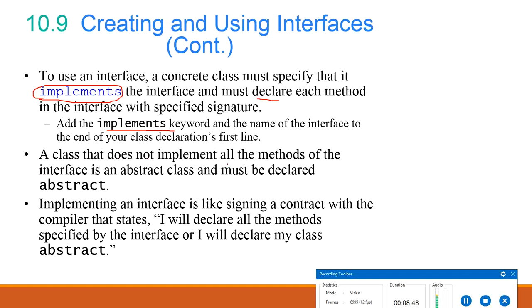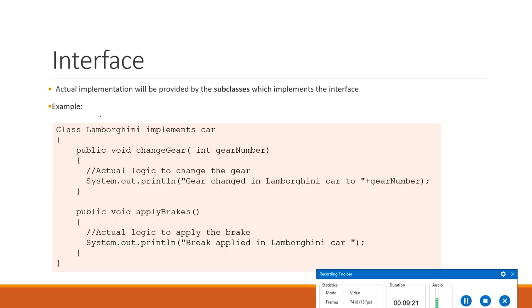Add the 'implements' keyword and the name of the interface at the end of your class declaration, just like you used 'extends' in inheritance. A class that does not implement all the methods of the interface must be declared as abstract. Implementing an interface is like signing a contract with the compiler — saying you will declare all the methods provided in the interface, or you will declare your class as abstract.